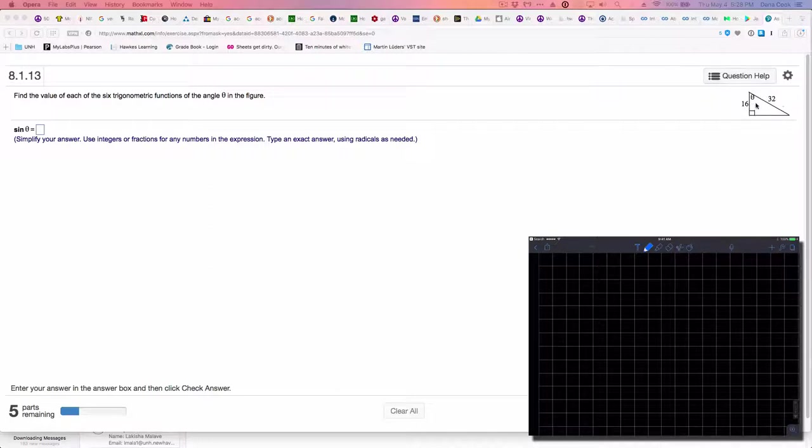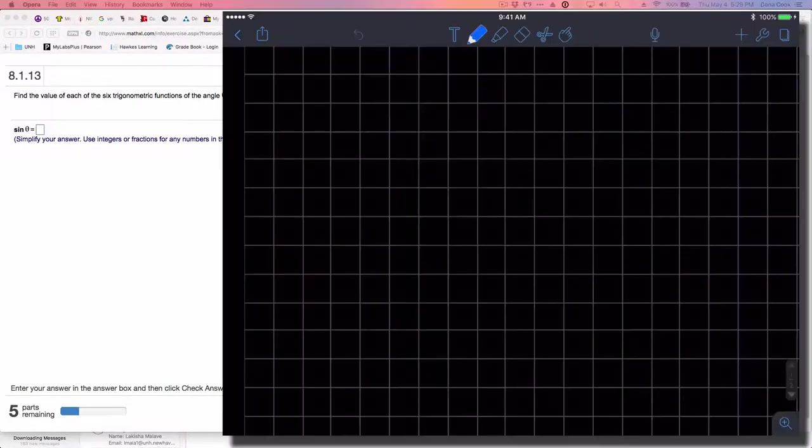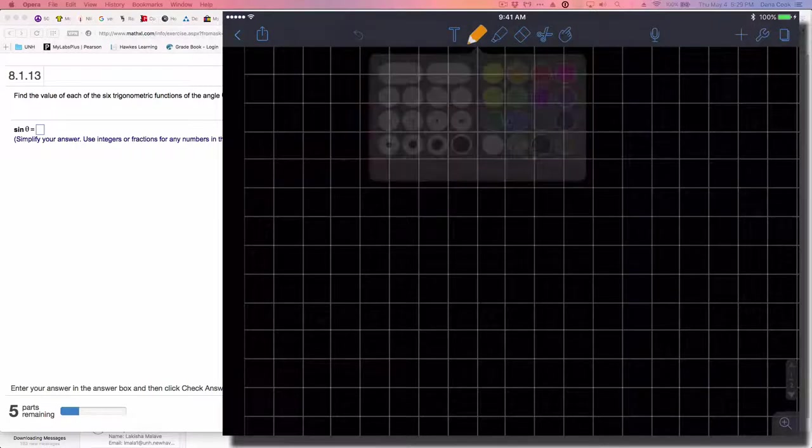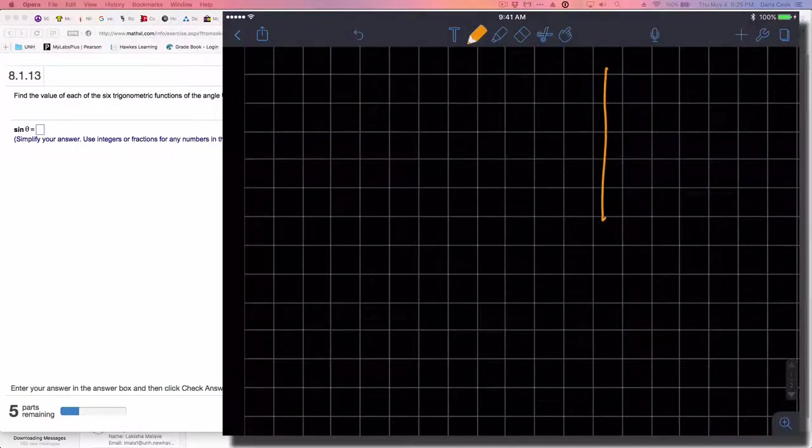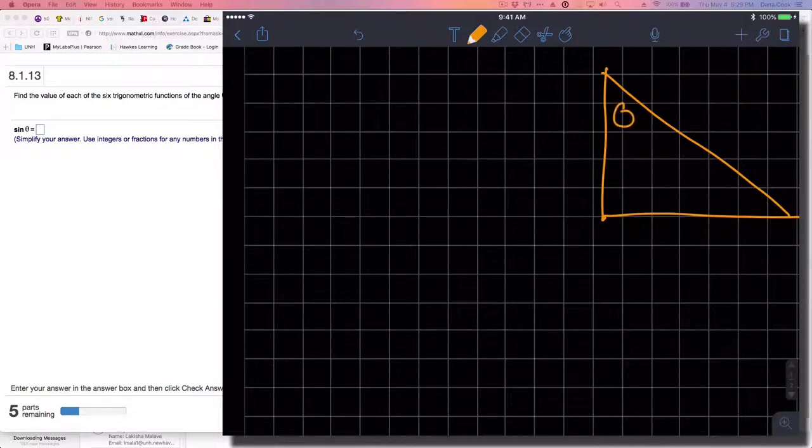Note that it's a right triangle. They want the six trigonometric functions, so I'm going to reconstruct our triangle. We have this triangle, not to scale. My theta is up here, 16 is here, 32 is here, and it's a right triangle.